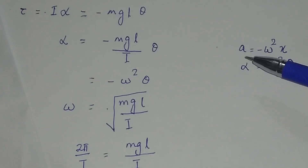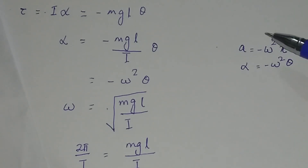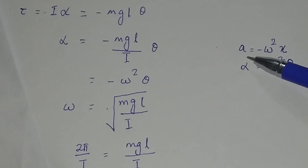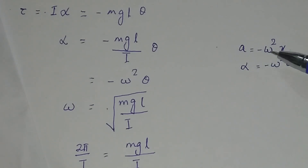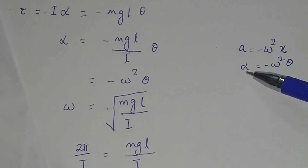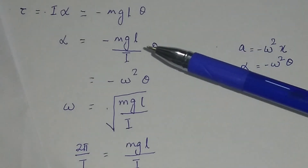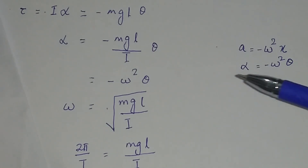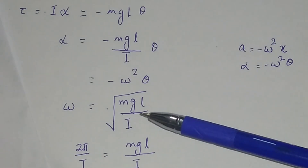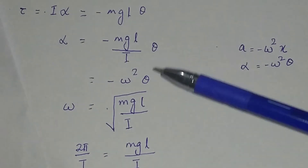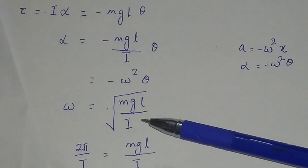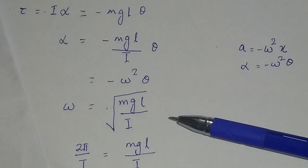The relation between acceleration and displacement: in simple harmonic motion, a equals minus omega squared into x. Writing alpha in place of a and theta in place of x for angular motion, the equation becomes alpha equals minus omega squared into theta. Comparing these two equations, omega squared will be equal to mg l divided by i, and omega will be equal to the square root of mgl divided by i.